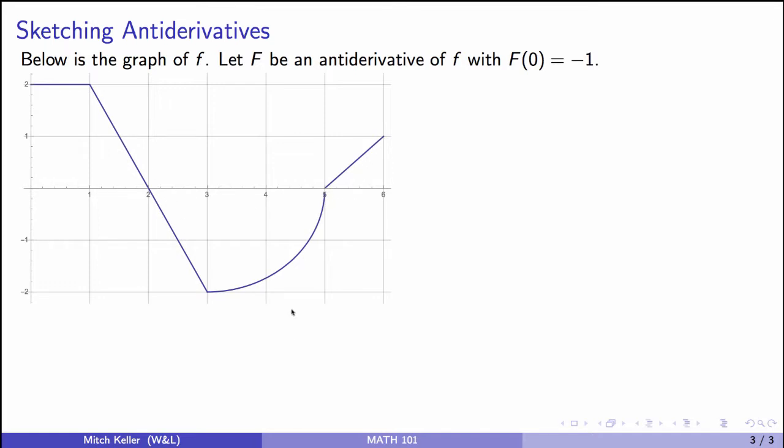So let's start working out some values here. We're told that big F is an antiderivative for little f. This graph is our little f, and we know that big F of 0 equals minus 1. Just like we did before, let's start working out some of these other values. So big F of 1, then, is big F of 0 plus the integral from 0 to 1 of f of x dx. Well, this says the area under the graph of little f from x equals 0 to x equals 1. So it's really asking about this area, which has area 2. So that's minus 1 plus 2. So big F of 1 is 1.